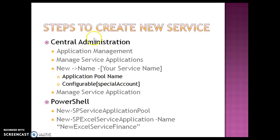To create a new service application from central administration, you go to 'Manage Service Applications' and simply provide the name. Sometimes you also have to provide the application pool name, and in some cases the database server — for example, for an Access Service Application. The second way to create is through PowerShell using the command New-SPServiceApplication. It depends on the type: for Excel you would use New-SPExcelServiceApplication, and for Search you would use New-SPSearchServiceApplication.